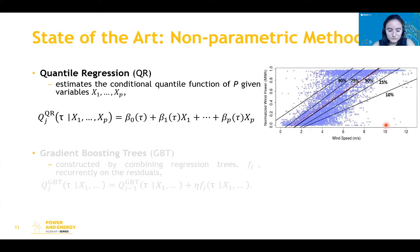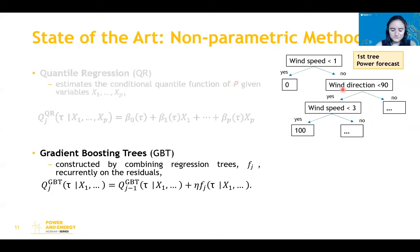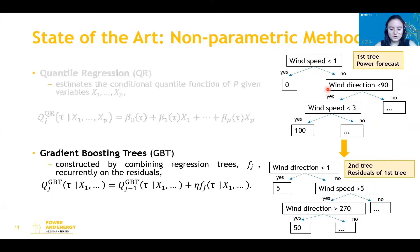In terms of non-parametric models, linear quantile regression and gradient boosting trees are two widely used methods. Linear quantile regression assumes a linear relationship between power and covariates, which is a strong assumption — the relation between wind speed and power production is not linear. Gradient boosting trees allow capturing more complex relationships by combining regression trees recurrently on modified data. The first tree estimates quantiles through covariates such as wind speed and direction, and residuals are predicted using subsequent trees. Although these methods achieve good results for quantiles between 5% and 95%, their performance for the tails is poor.